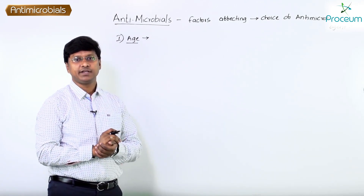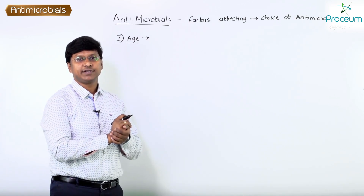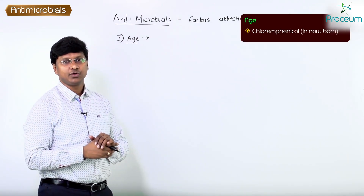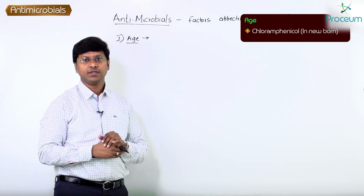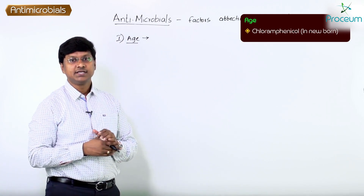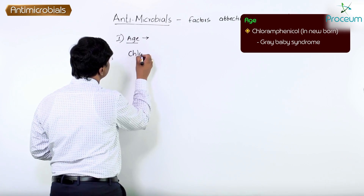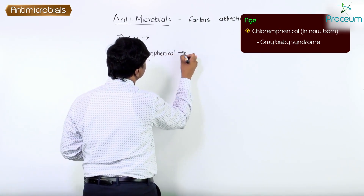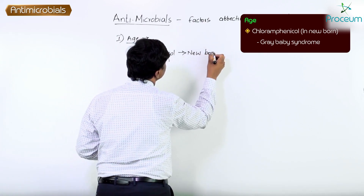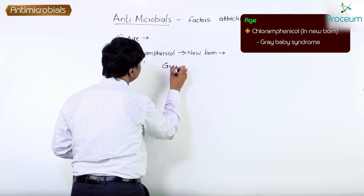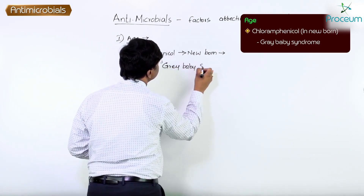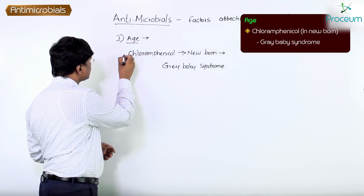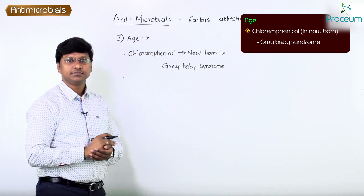The first factor is age. Some antibiotics are not indicated in children, and some are not indicated in elderly. For example, chloramphenicol should not be given to a newborn baby because it can cause what is called gray baby syndrome.